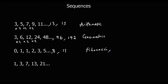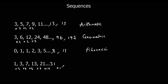The last one goes: 1, 3, 7, 13, 21. It goes up by 2, then 4, then 6, then 8 — so the differences are increasing by 2 each time. The next term will be plus 10, giving 31, and then plus 12, giving 43. This is called a quadratic sequence.